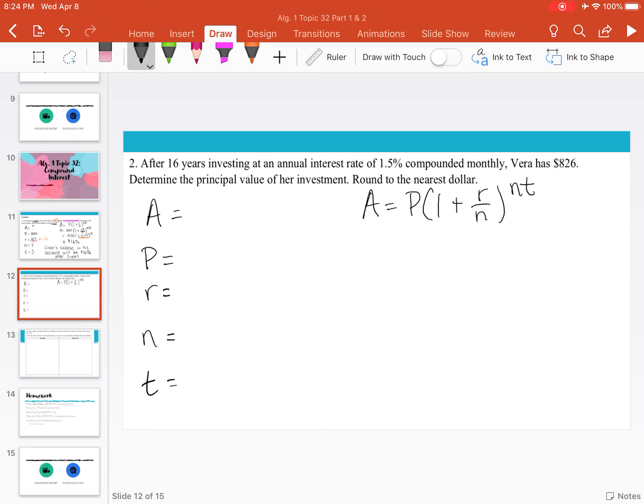A is our final amount. Do we know how much Vera has at the end? We do. Because it says after 16 years, so we know that time has passed. This $826 is going to represent our A. Do we know how much Vera starts with? We do not. The problem says determine the principal value. In other words, P is our unknown.